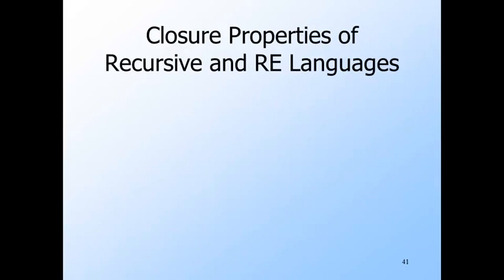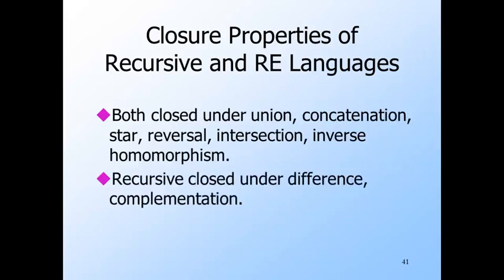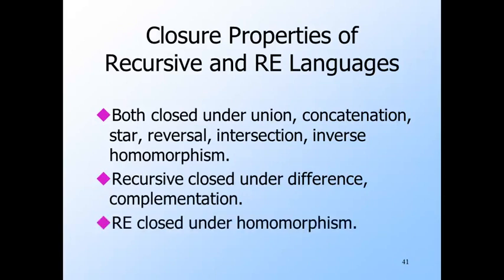Now we're going to see something of the closure properties for both the recursively enumerable languages — those defined by Turing machines that may run forever if they don't accept — and the recursive languages — those defined by Turing machines that will eventually halt without accepting if they choose not to accept the input. Each of these classes is closed under union, concatenation, and star. They are also closed under reversal, intersection, and inverse homomorphism. The recursive languages, but not the recursively enumerable languages, are closed under difference and therefore complementation. The recursively enumerable languages, but not the recursive languages, are closed under homomorphisms.